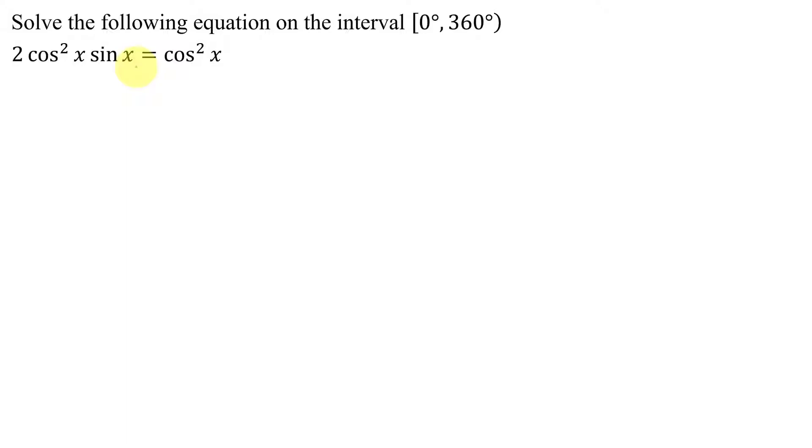Does it look like it's going to work in this case? If I get everything on one side, then I'm only going to have two terms, and they will have a common factor that I can factor out. So the first thing I'm going to have to do is subtract cosine squared x from both sides. On the left-hand side, I have unlike terms, I can't combine them. So I have 2 cosine squared x times sine x minus cosine squared x equals zero.